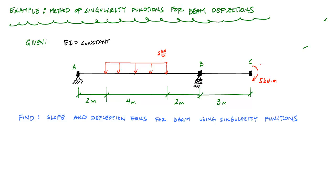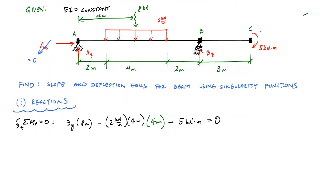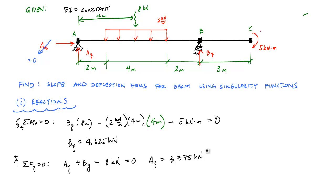The first thing I want to do is calculate reactions, and that typically involves setting up a free body diagram. AX equals 0. Taking sum of moments about point A to get the reaction BY: the resultant of the distributed load is 8 kilonewtons at a distance of 4 meters from point A, and the concentrated moment is 5 kilonewton meters. Solving, BY is 4.625 kilonewtons. Then taking sum of forces in the vertical direction gives AY equals 3.375 kilonewtons.